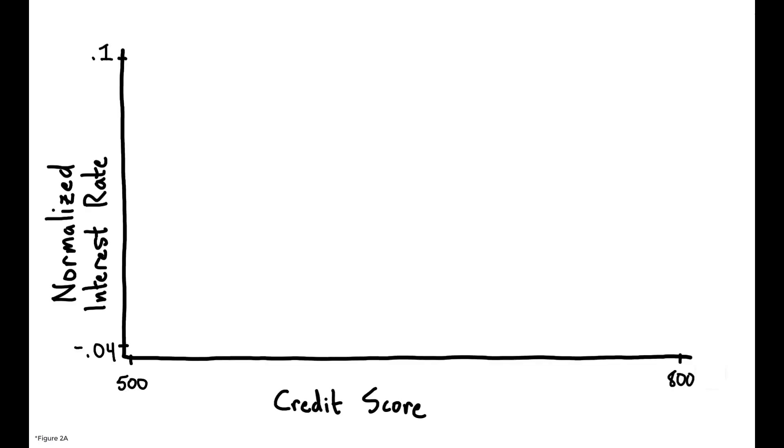To illustrate, this figure corresponds to a single lender in their data. Each point corresponds to the average interest rate this lender offered to borrowers in the corresponding credit score bin, and the resulting pattern maps out a pricing rule with clear and substantial jumps in interest rates at credit scores of